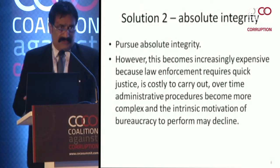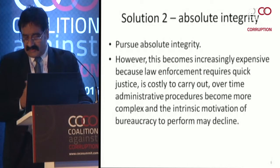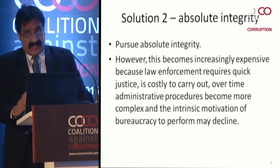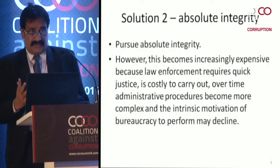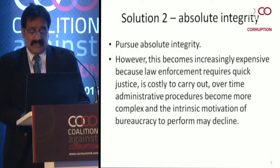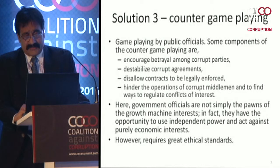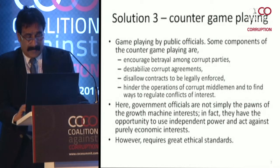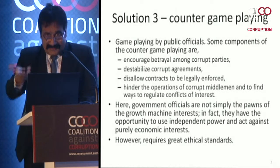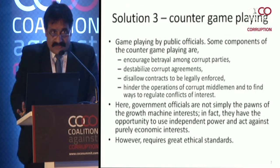The second approach, from before the 1980s, was absolute integrity — you employ the best, pay them the best, and pursue absolute integrity. But this has issues: it becomes increasingly expensive because law enforcement requires quick justice. Before 1971-72, the executive and judiciary were one, so it could be done. After their separation, this became extremely costly and the intrinsic motivation of the bureaucracy became a challenge. The third approach arises from new institutional economics — counter game playing — as practiced by our CAG, CEC, and several high-minded public officials.